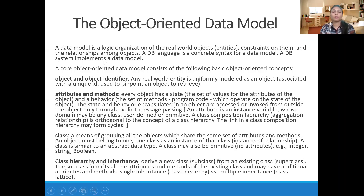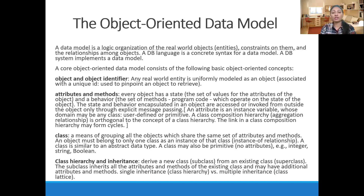Next is attributes and methods. Every object has a state — the set of values for the attributes of the object — and behavior — the set of methods or program code which operate on the state of the object. Just as in object-oriented classes, there are different kinds of attributes and methods. The state and behavior encapsulated in an object are accessed from outside only through explicit message passing, like calling a method using the dot operator.